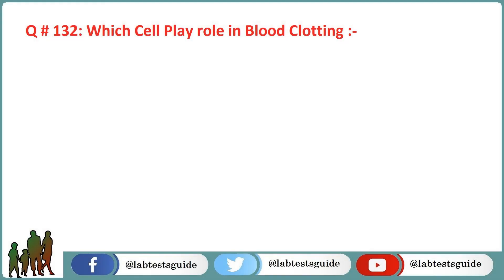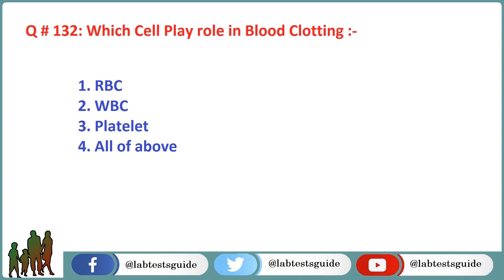Next question is 132: Which cell plays a role in blood clotting? Option 1: RBC. Option 2: WBC. Option 3: Platelets. Option 4: All of the above. The correct answer is Option 3: Platelets.